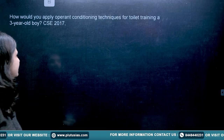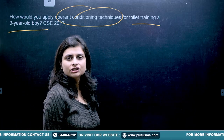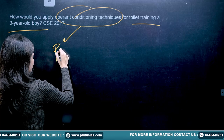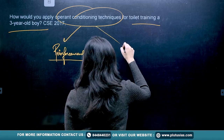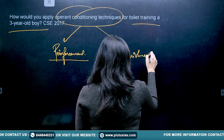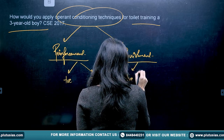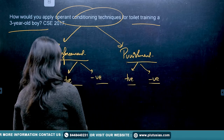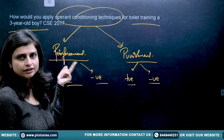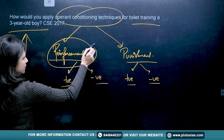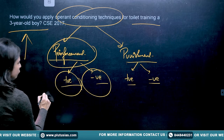The next question from 2017 asks: 'How would you apply operant conditioning techniques for toilet training a three-year-old boy?' First, explain what operant conditioning is. You need to talk about reinforcement and punishments — discuss both positive and negative aspects. For a three-year-old boy, let's talk about positive reinforcement and negative reinforcement.